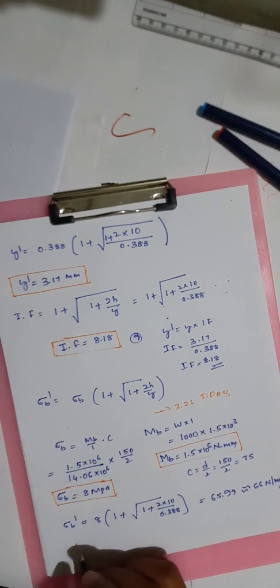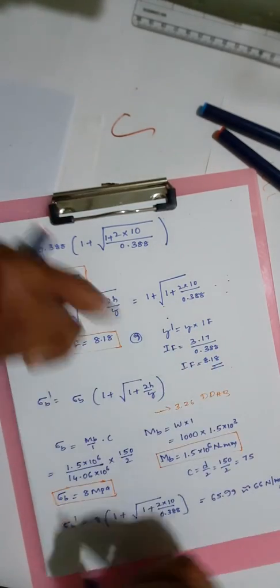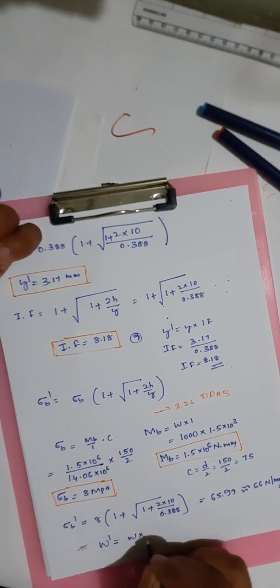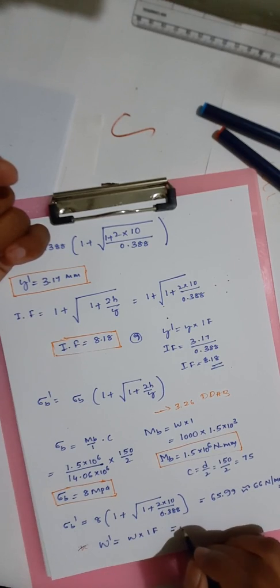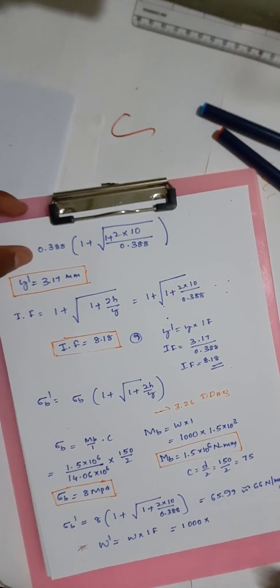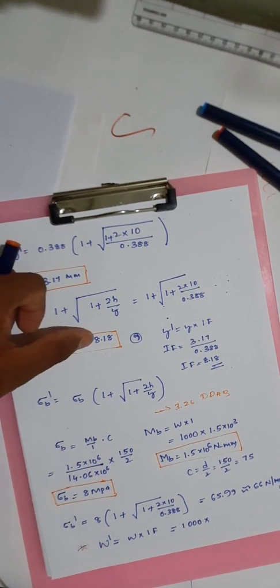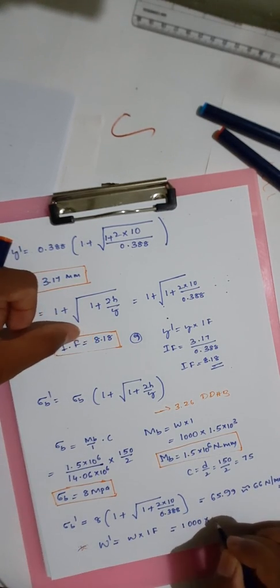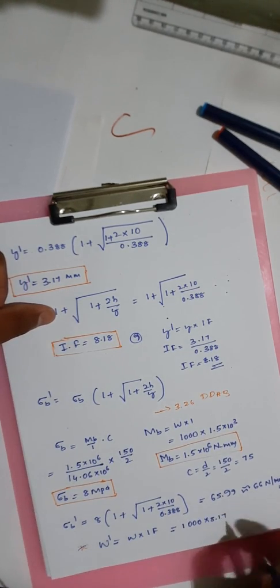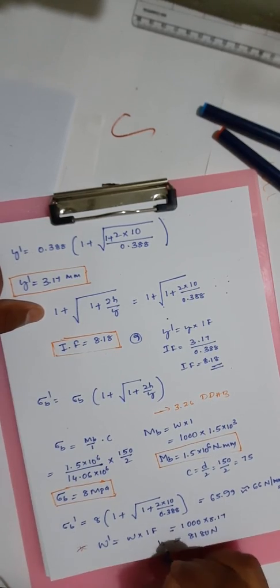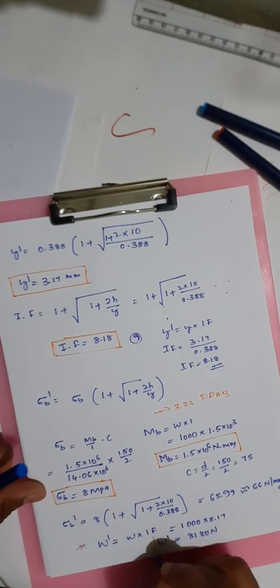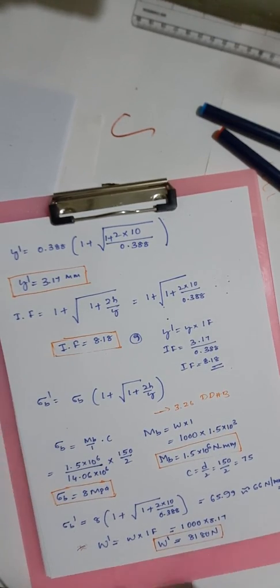Finally, the maximum load W' = W × impact factor = 1000 × 8.18 = 8180 N. This completes the solution: impact factor = 8.18, maximum deflection y' = 3.17 mm, maximum bending stress σ_b' = 66 N/mm², and maximum load W' = 8180 N.